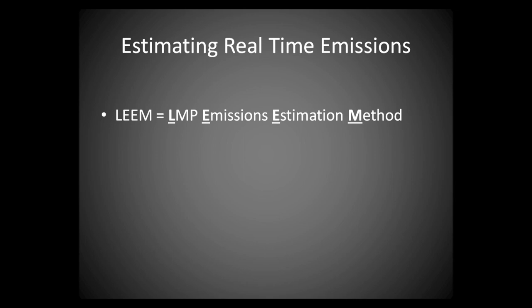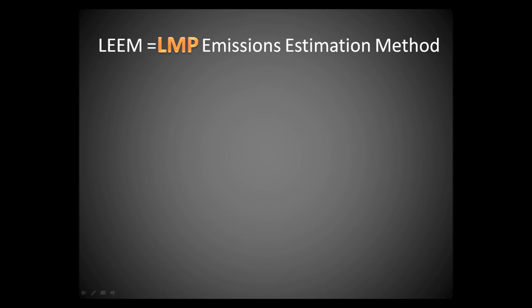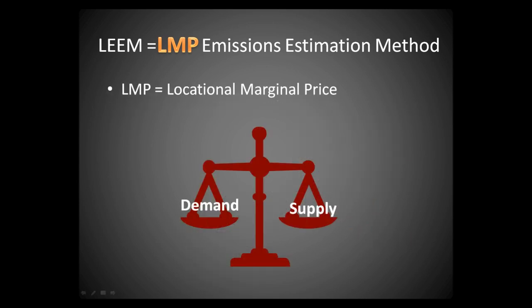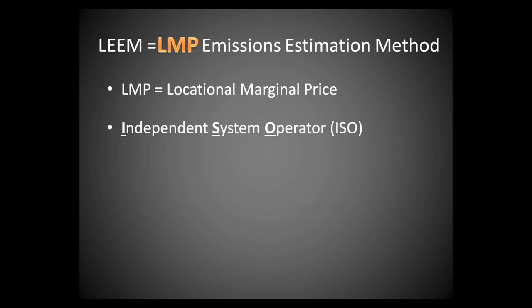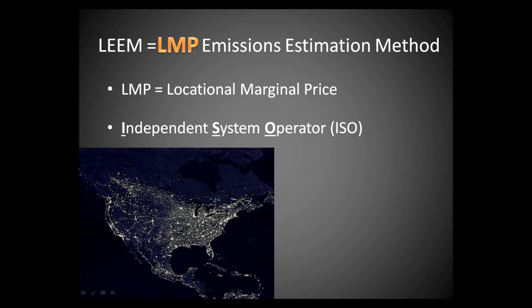LEAM is LMP Emissions Estimation Method. The first part, LMP, stands for Locational Marginal Price. LMPs are wholesale prices of electricity, used to manage the balance of demand and supply of electricity. LMPs are published by Independent System Operators, ISOs — organizations that manage the efficiency and reliability of our interconnected electric grid.